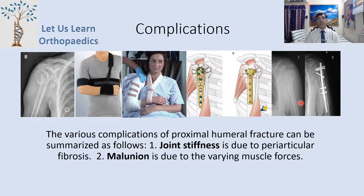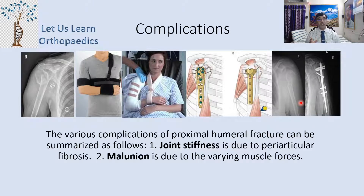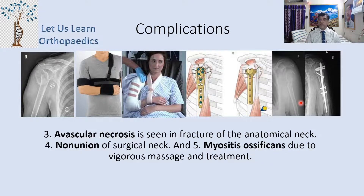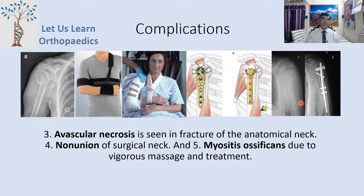Complications of proximal humerus fractures include: first, joint stiffness due to periarticular fibrosis; second, malunion due to various muscle forces; third, avascular necrosis if the fracture is at the anatomical neck; fourth, non-union of surgical neck fractures; and fifth, myositis ossificans due to vigorous massage during treatment.